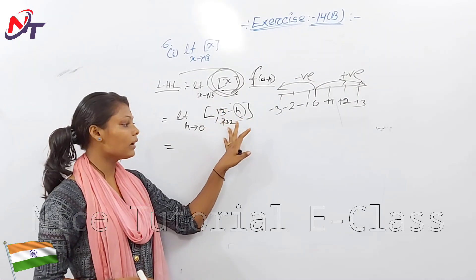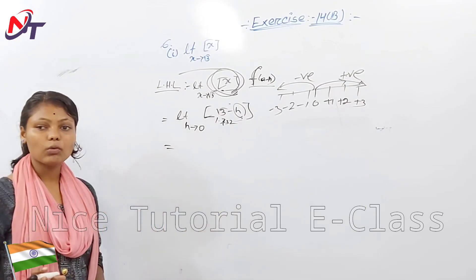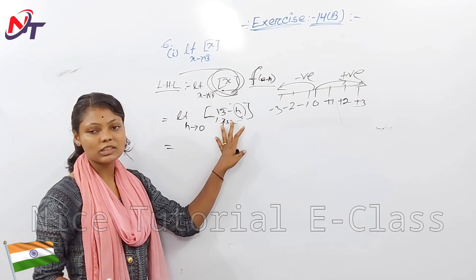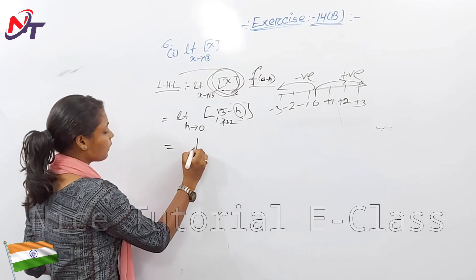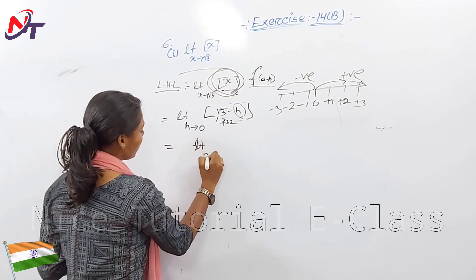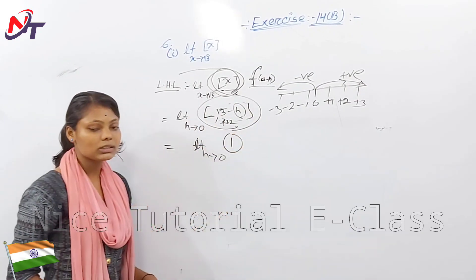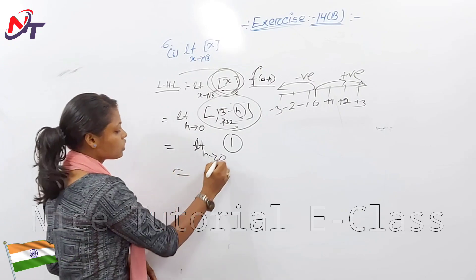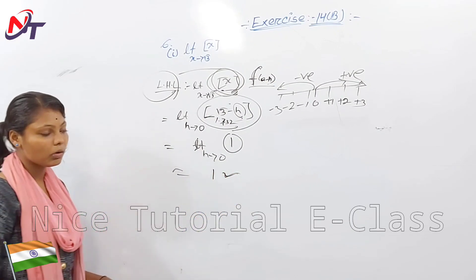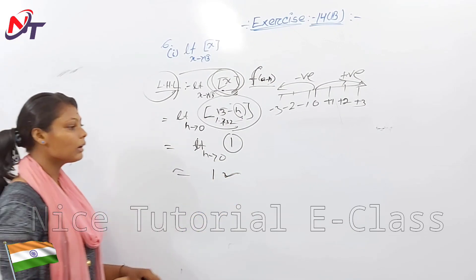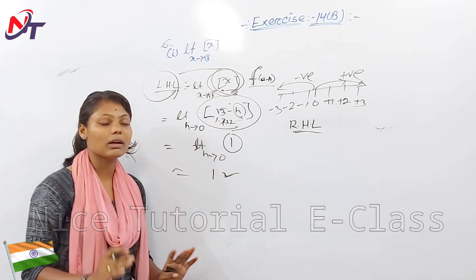So √3 minus something is 1.732 minus something, which is nearly equal to 1. That means limit h tends to 0 gives value 1. So the left-hand limit value is 1.